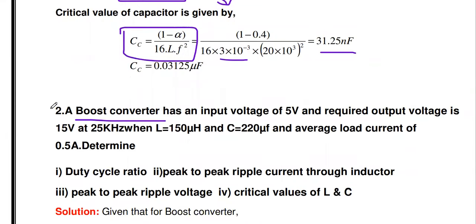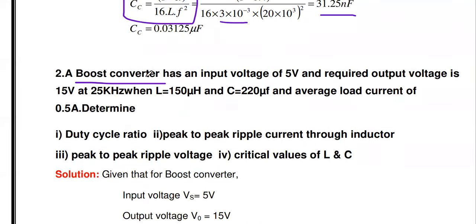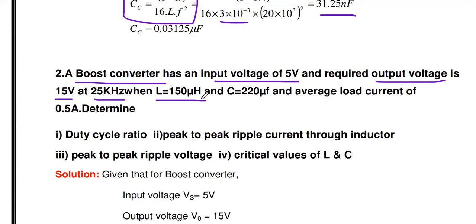For the second problem — boost converter: input voltage is 5V, required output voltage is 15V at 25 kHz. Inductor L = 150 μH, capacitor C = 220 μF, and average load current I0 = 0.5 A. We need to determine: duty cycle, peak-to-peak ripple current ΔI, peak-to-peak ripple voltage ΔVc, and critical values of L and C.